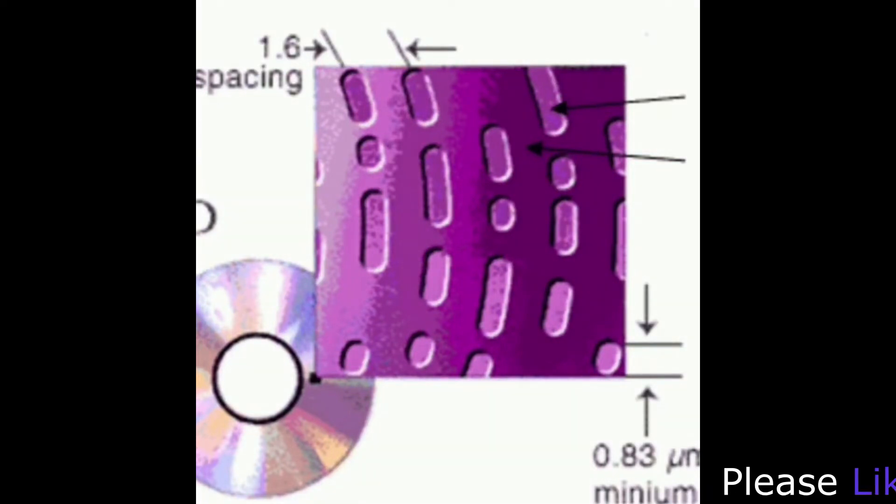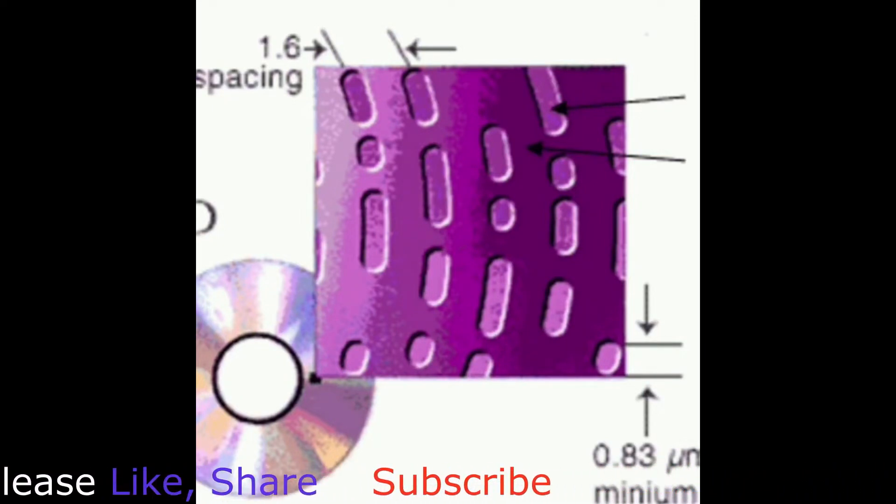The areas between the pits are known as lines. CD player which is known as write laser has the capability to alter the surface of CD and DVD instead of just bouncing the laser light off.